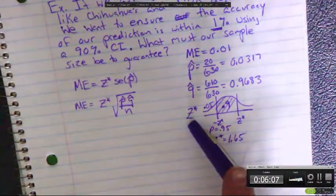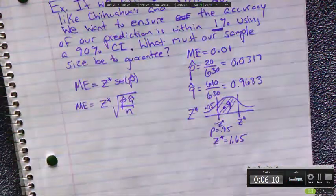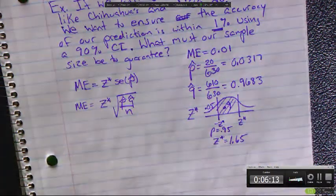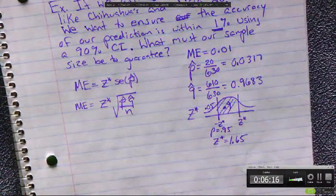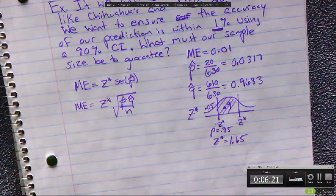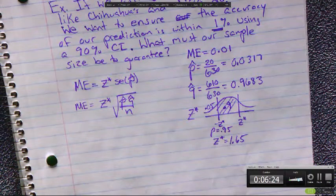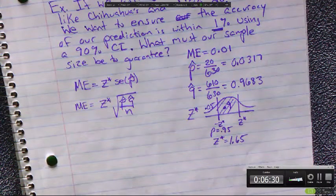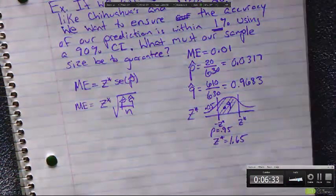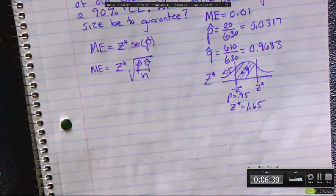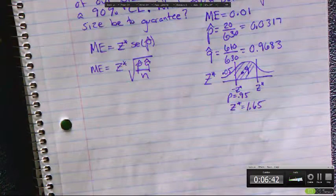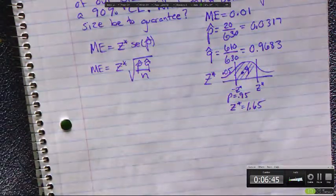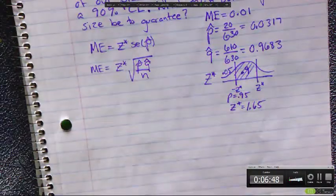So we've got z critical, we've got p hat, we've got q hat, we've got the margin of error. We've got everything except for the sample size. You're not going to be successful by trying to memorize all the formulas. You could just take all of that and plug it in: 20 out of 630 times 610 out of 630 divided by 0.01 over 1.65, squared. That'll give you the answer. So basically all you have to do is find each variable. It's going to be one question out of 20 on the test. It's going to be better for you to understand how to manipulate one formula rather than try to memorize five formulas.